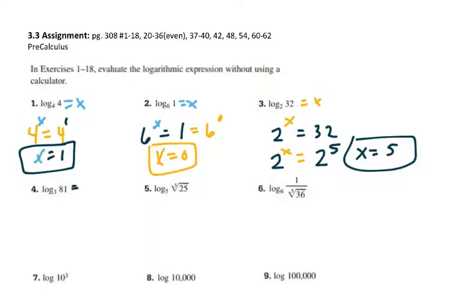Alright, next piece. 3 to the x is what we're looking at. And so we need to find out how many 3s times themselves make 81. So 3 to the... What is it? 3 times 3 times... 27, so 4. Yeah, that sounds about right. So x is 4.